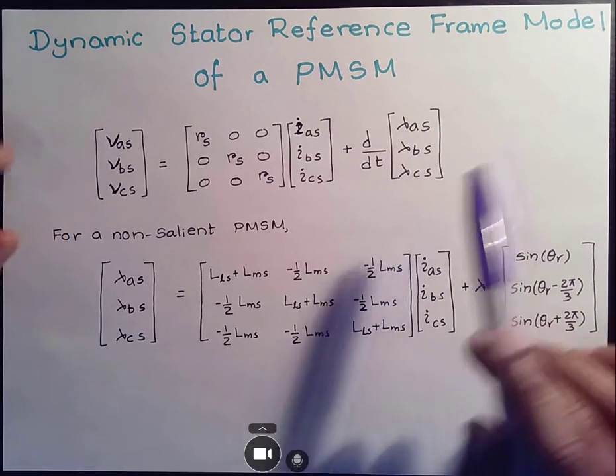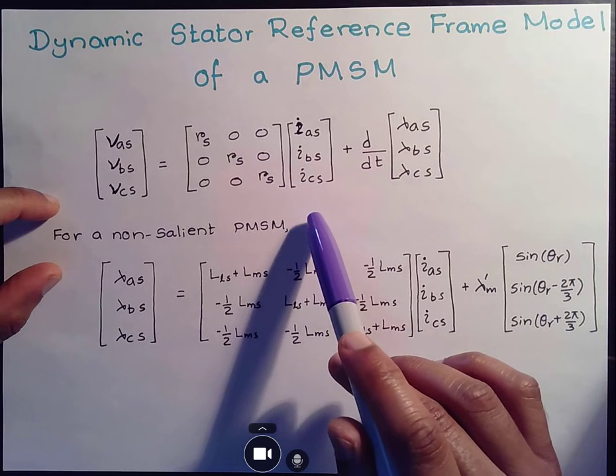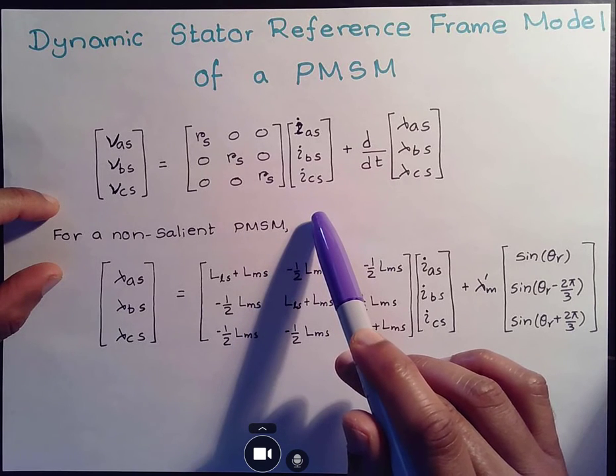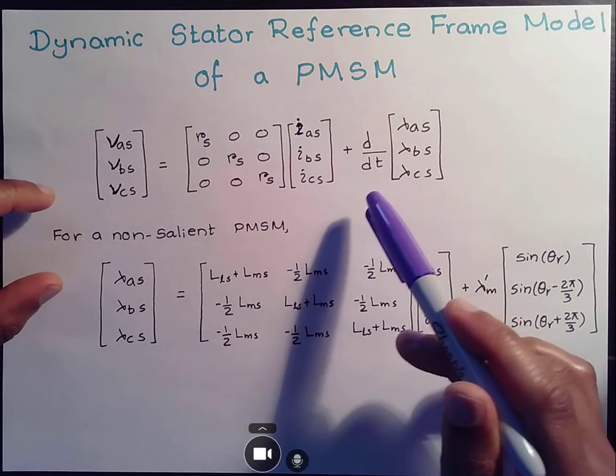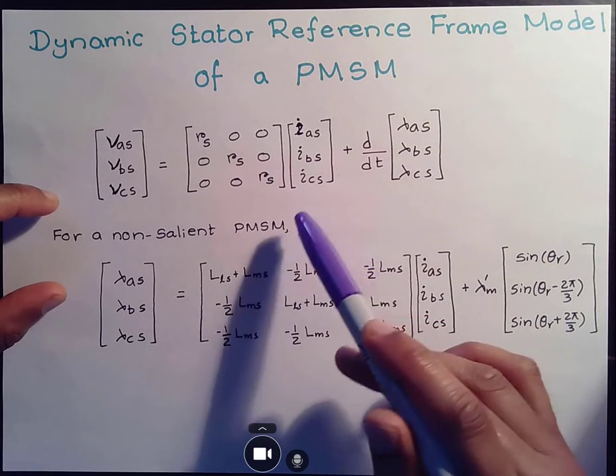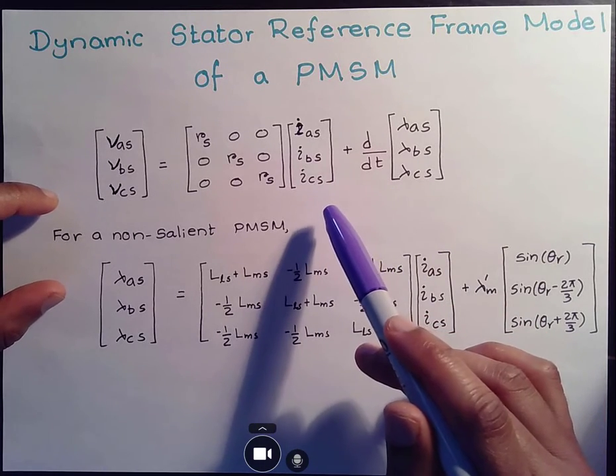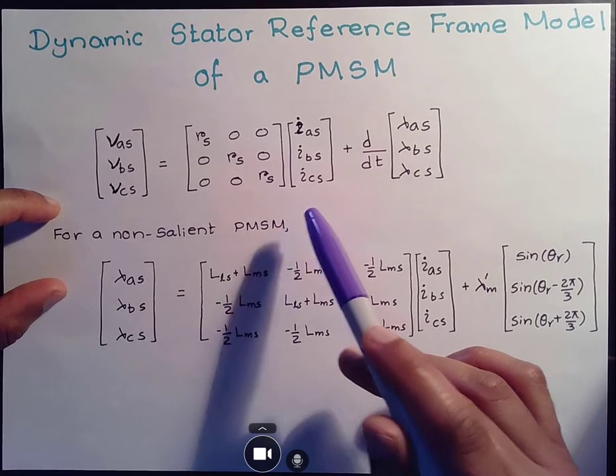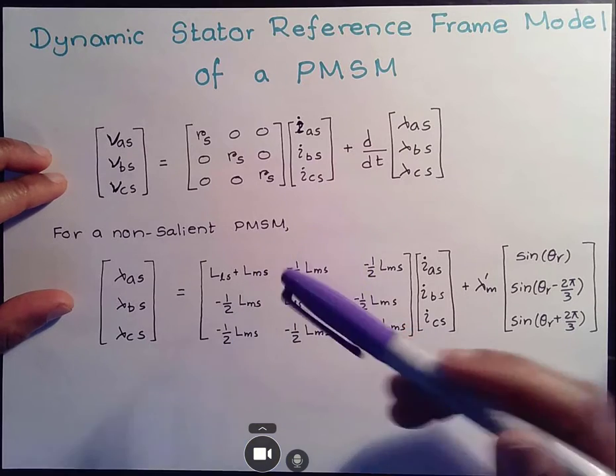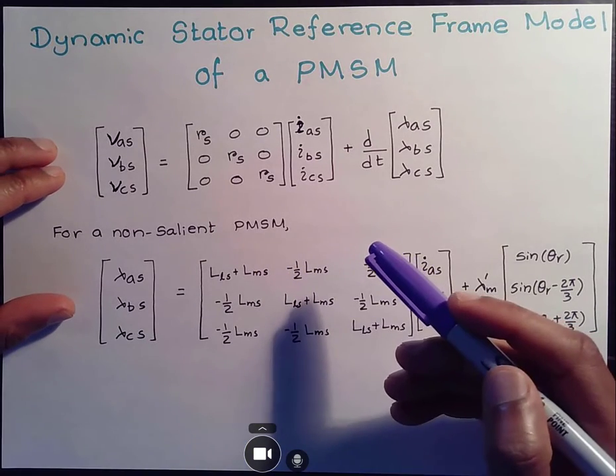And in this case, we're going to assume a non-salient PMSM, meaning the inductance LQ and LD, they are very close to each other. So there's no variation. And the primary reason we make that assumption is to simplify our model, at least when you get started with these kind of modeling.